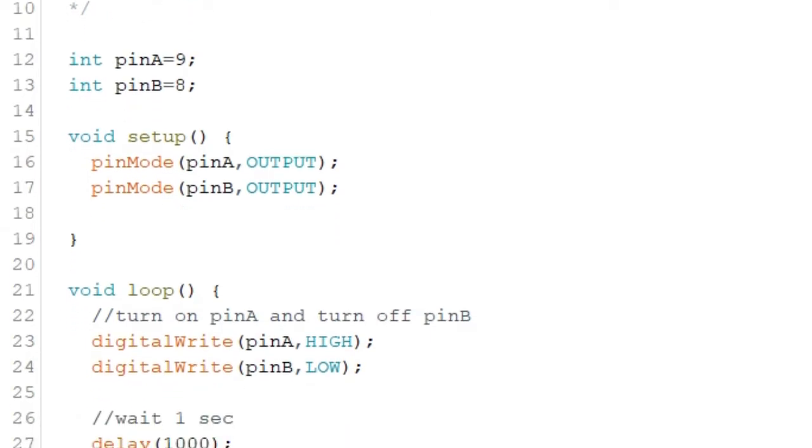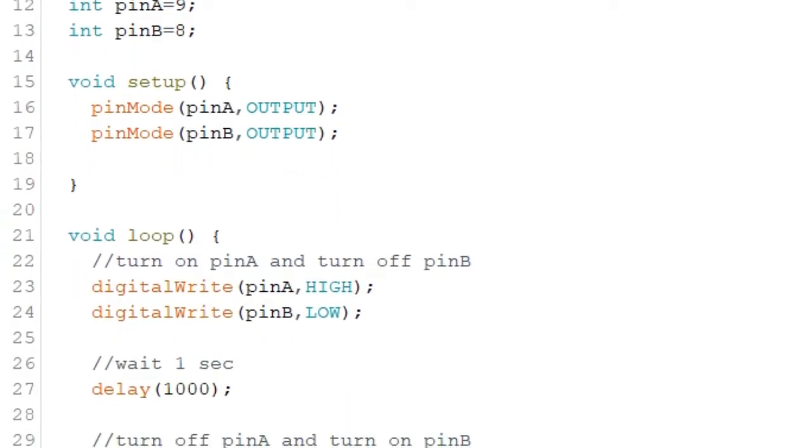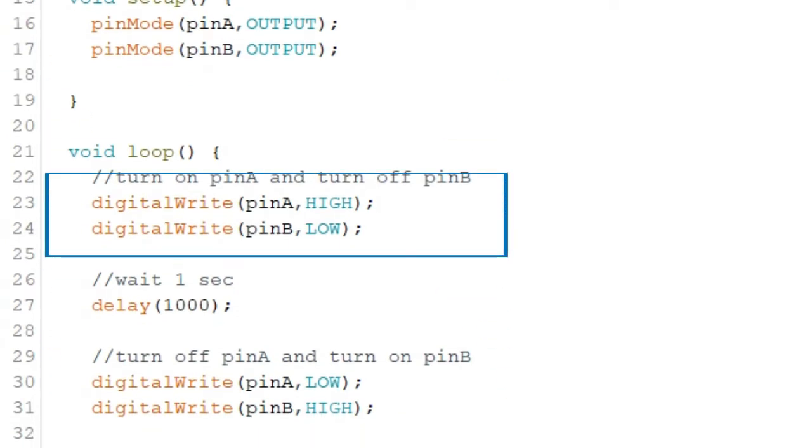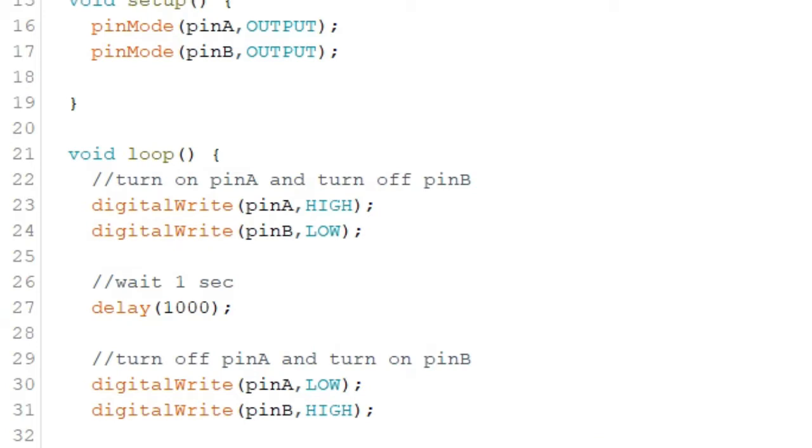We turn on and turn off the LEDs inside the loop function. To turn on LED1, we type in digitalWrite(pinA, HIGH);. And to turn off LED2, we immediately type in digitalWrite(pinB, LOW);. By writing these statements in succession, they will be executed at almost the same time.